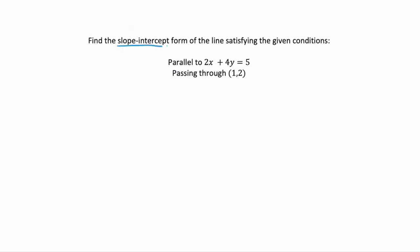First remember that slope intercept form is our y equals mx plus b format. So we're told that we want a line that is parallel to 2x plus 4y equals 5, and it needs to pass through the point (1, 2).